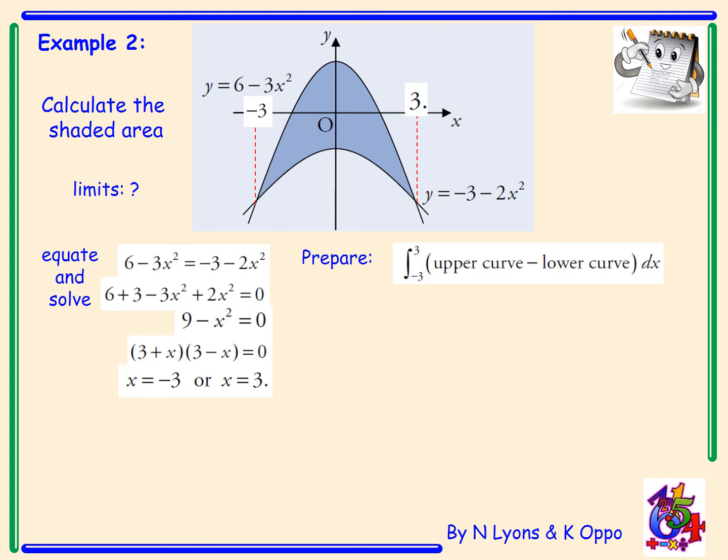Now I have to find the area. So the area is, first of all, I'm going to prepare. We've got the integral from minus 3 to 3 of the upper curve minus the lower curve. Now you're better to simplify as much as you can before you integrate. Okay, so I've got the integral from minus 3 to 3 of 9 minus x squared dx.